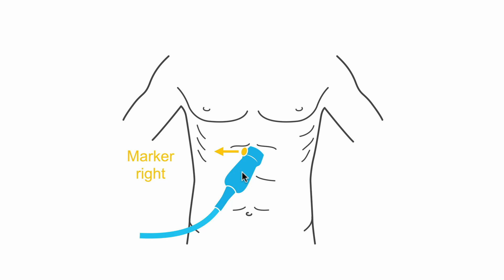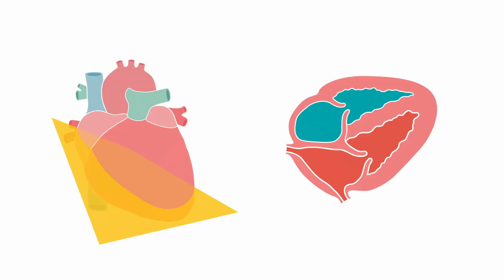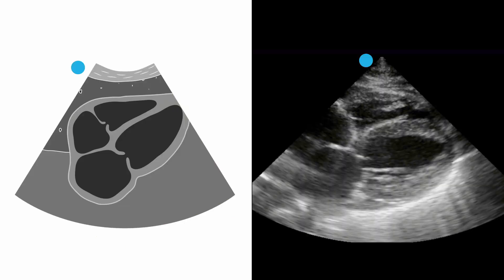You should be able to identify your heart. This is the orientation you will see: right ventricle, left ventricle, mitral valve, left atria, right atria, and your tricuspid valve. Here's what it will look like on ultrasound: right and left ventricles on the top, mitral valve, your left atria, your right atria, and your tricuspid valve.